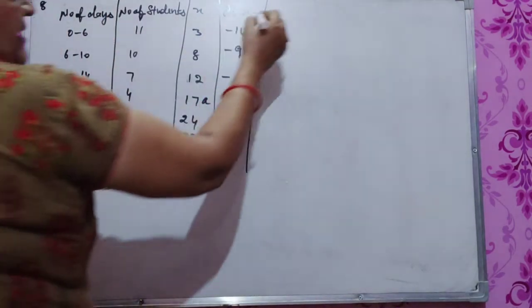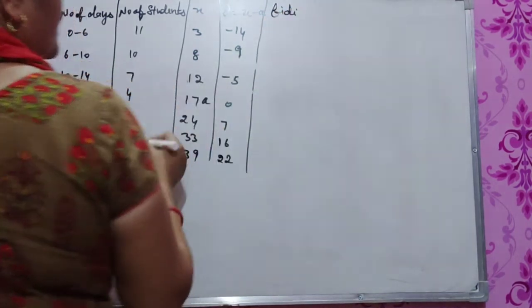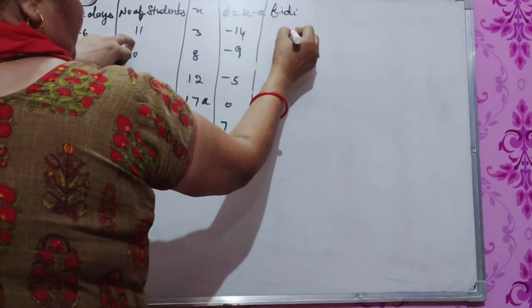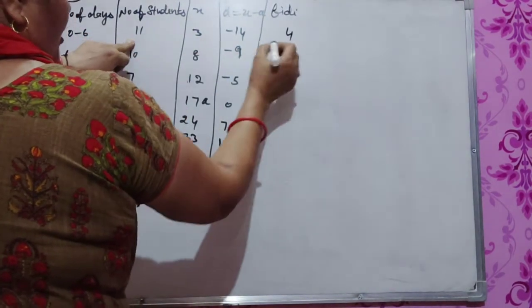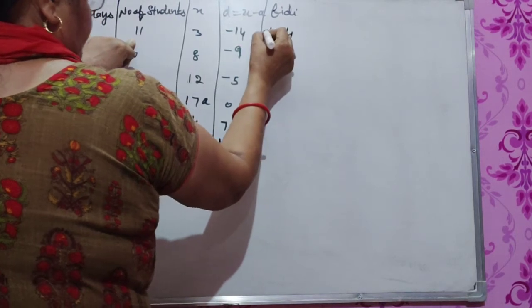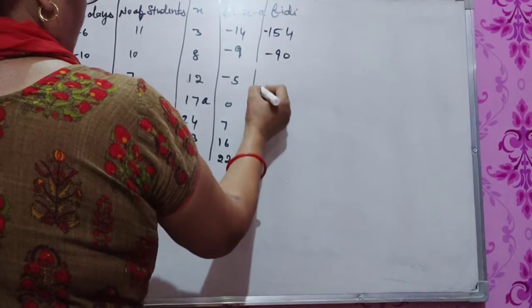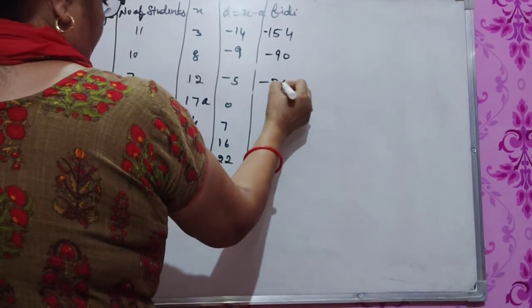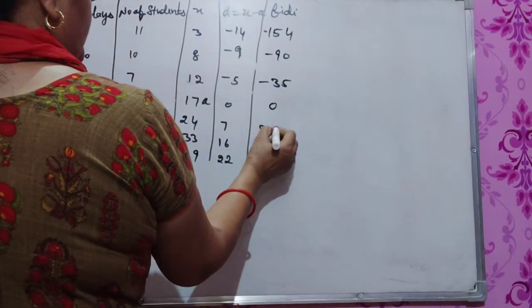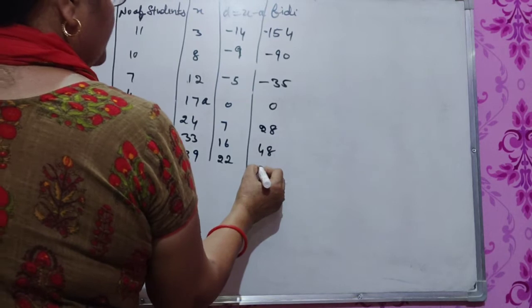Now we'll multiply. f times d: 11 times minus 9 is minus 99, 10 times minus 5 is minus 50, 7 times 0 is 0, 4 times 7 is 28, 4 times 16 is 64, 3 times 22 is 66.